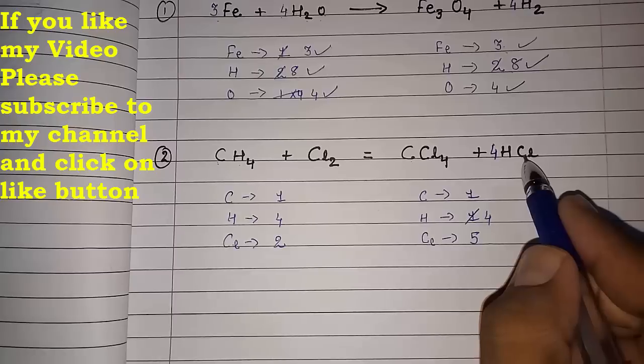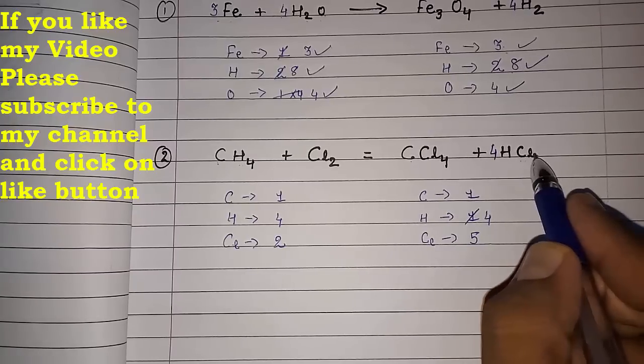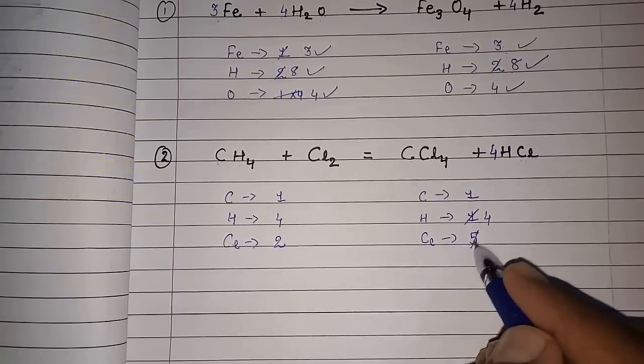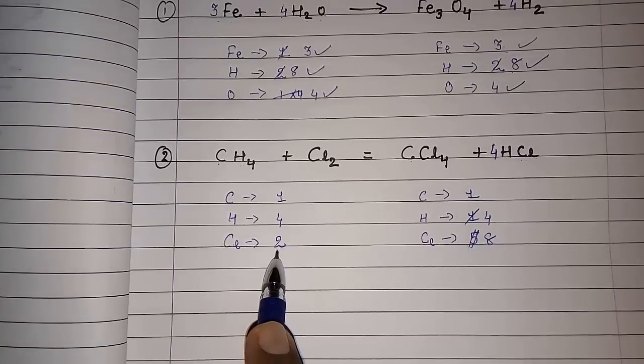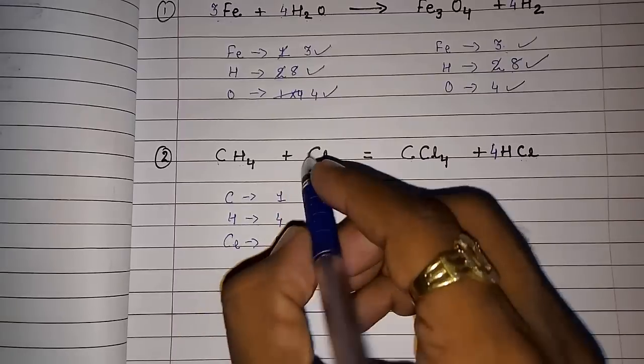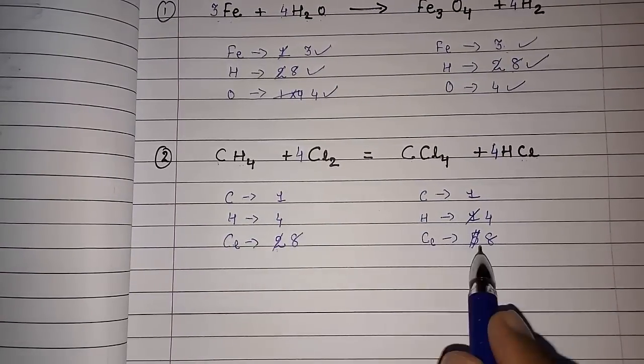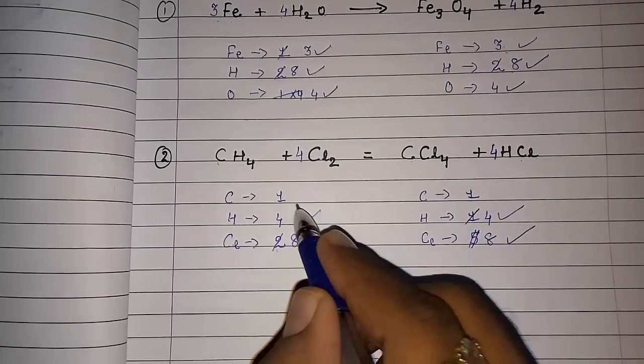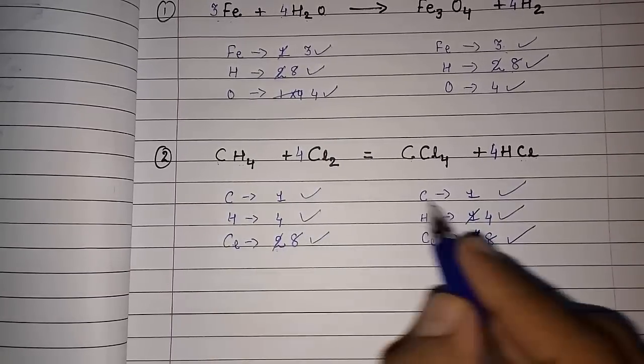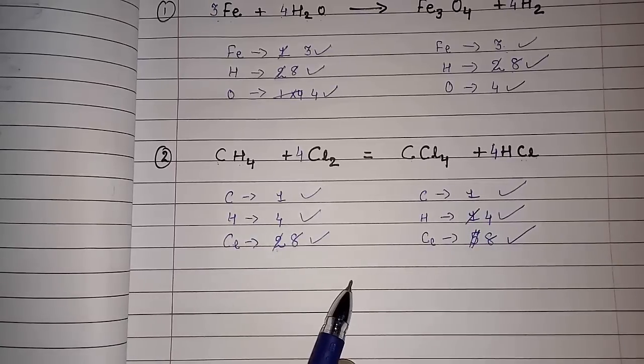But the problem is now the Cl also becomes four. So now here four and four, total eight Cl is there. So here Cl2 is there. So I want to make it eight. So if I keep four here, this will also become eight. Now this hydrogen equal, this also equal, and actually they had given this chlorine equal, carbon equal only. So now our equation is balanced.